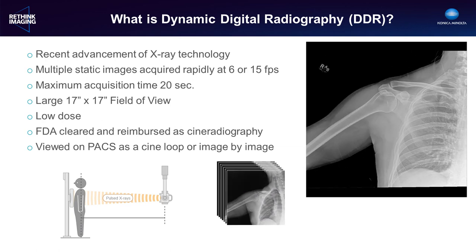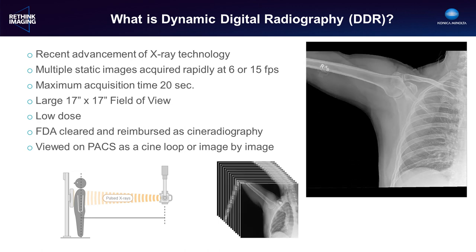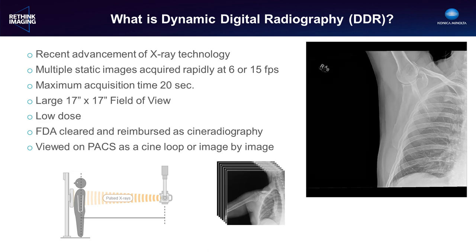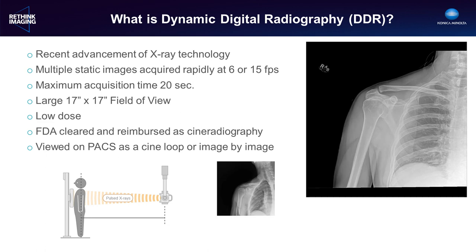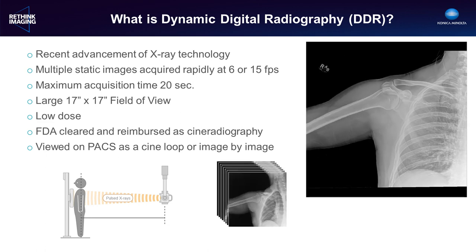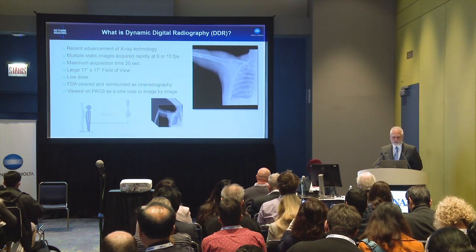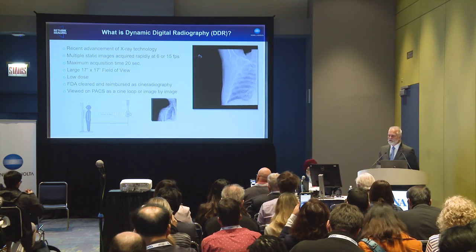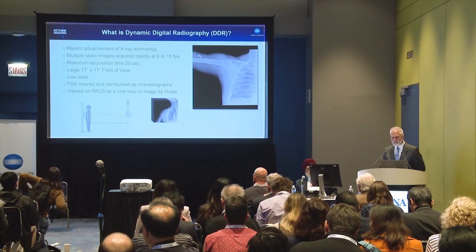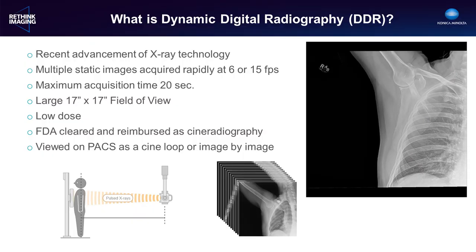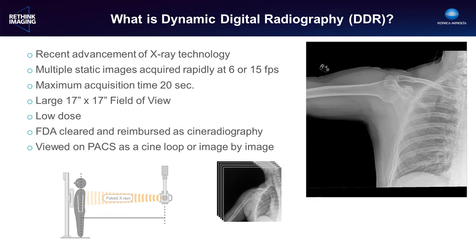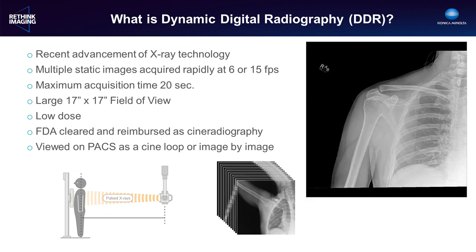What is dynamic digital radiography? DDR is an advanced technique, cleared by the FDA in late 2018. It enables the acquisition of a series of static images at 6 or 15 frames per second over the full 17 by 17 inch field of view of a large format flat panel detector. The maximum acquisition time is 20 seconds. We need an x-ray generator capable of pulsed, very low dose exposures. For a 15-second, 15-frame-per-second chest acquisition, the typical dose is just over 7 micrograys per image, for a total of about 1.5 milligray. The resulting image data sets are standard DICOM objects viewable on PACS as a cine loop or frame by frame. Individual images can be extracted for further analysis.